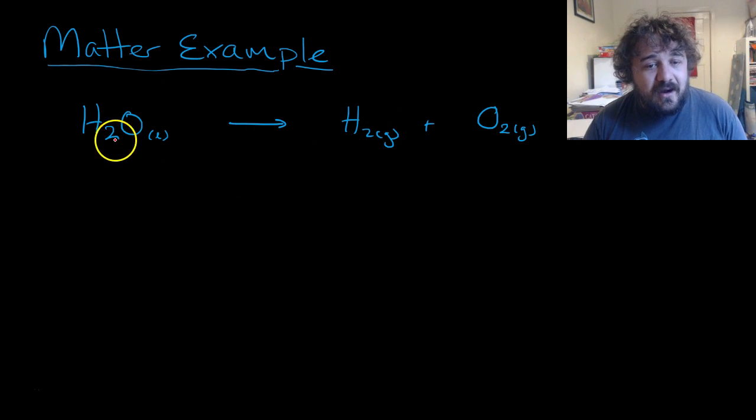Now the problem is we've destroyed the universe at the same time if this equation goes as it is. Because two hydrogens, two hydrogens, one oxygen. What? Two oxygens! That's bad! If that was true, that would mean we'd be creating matter. And we can't do that.